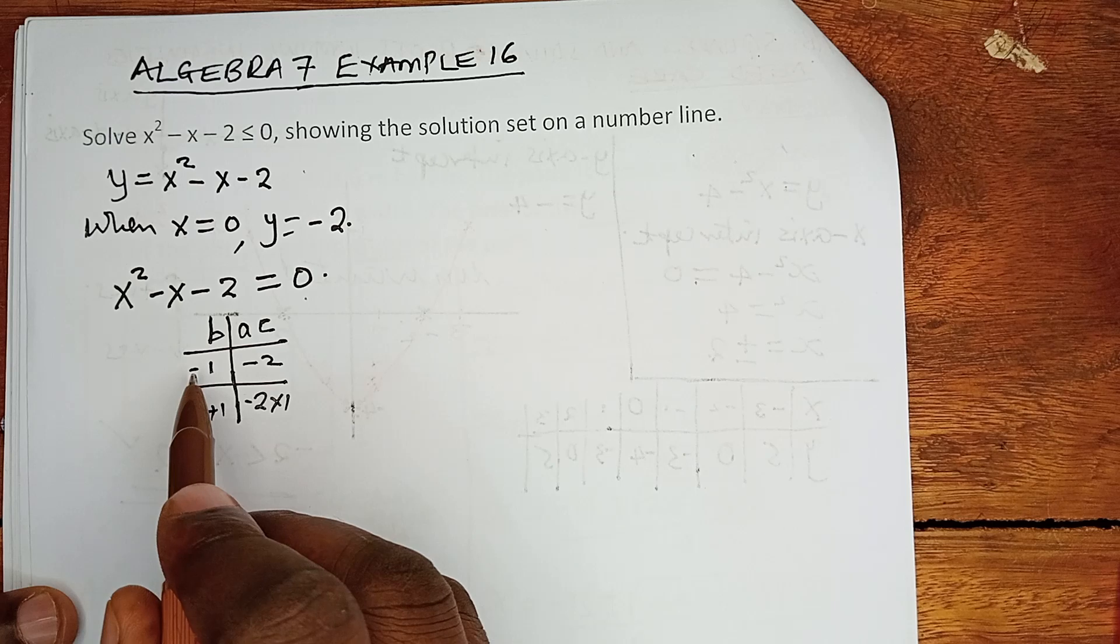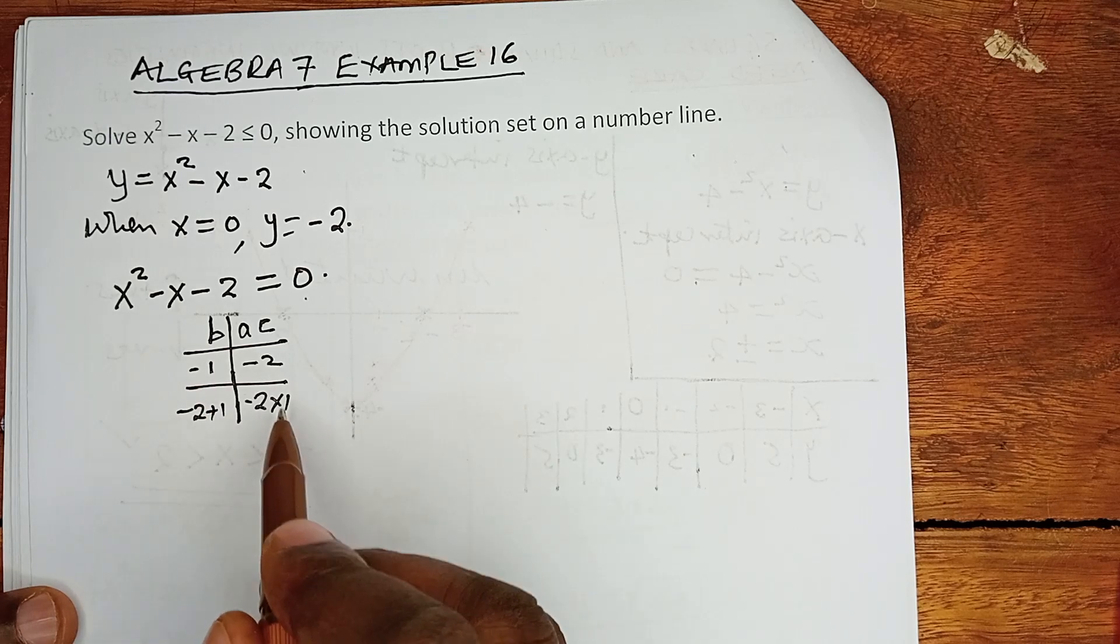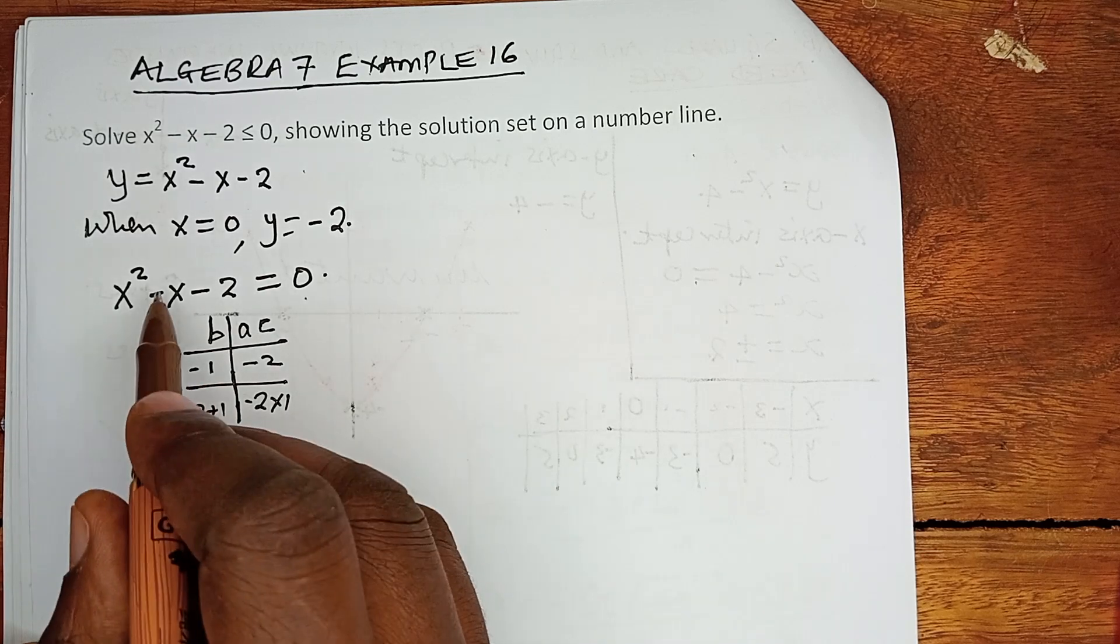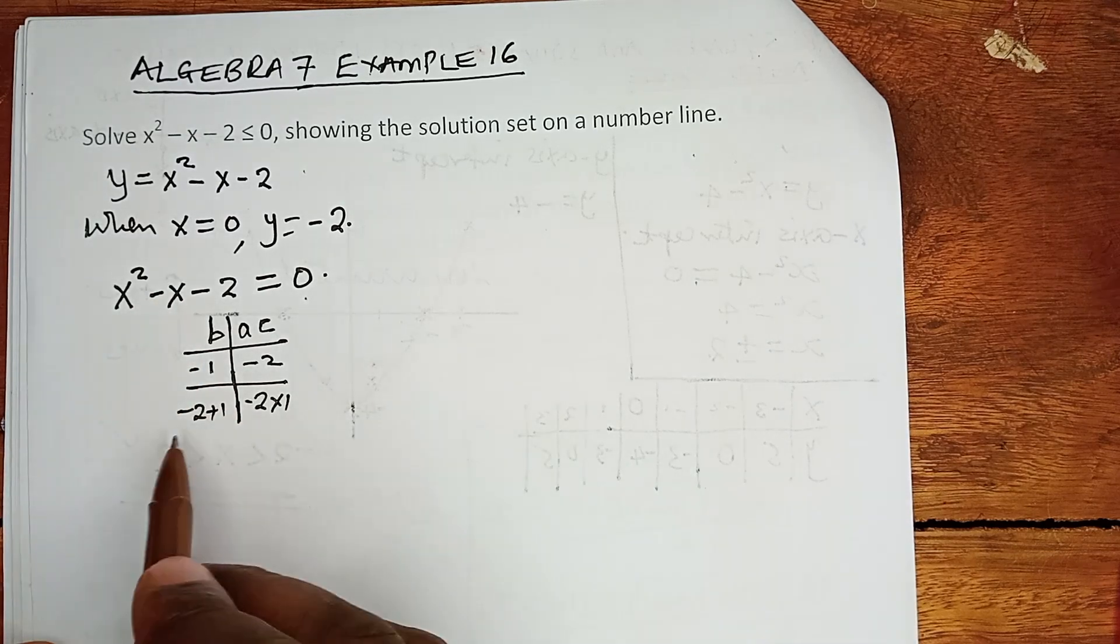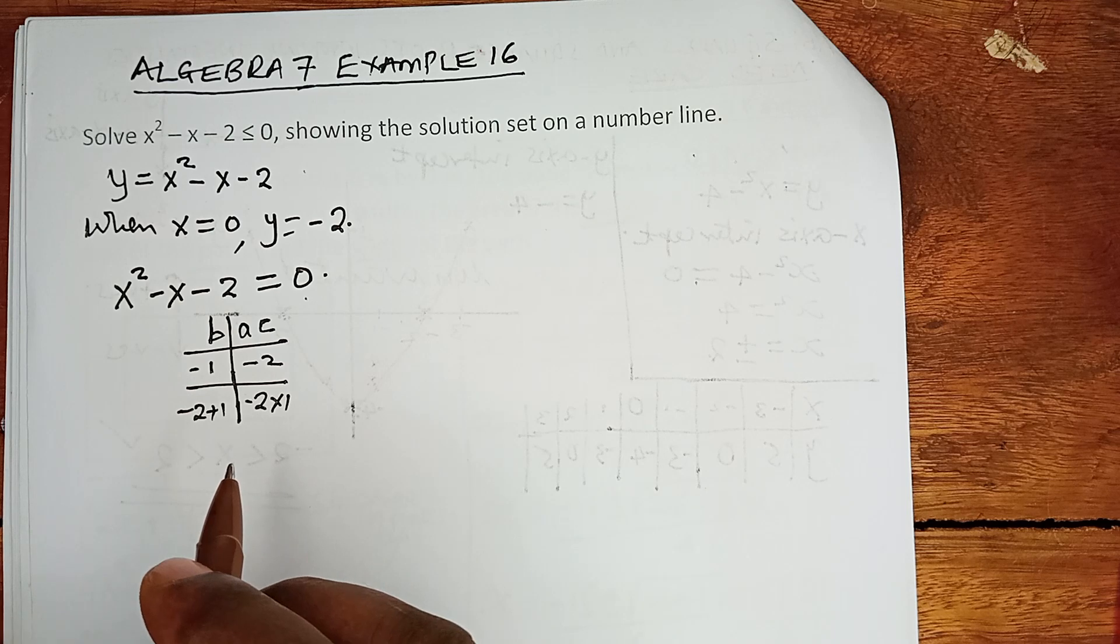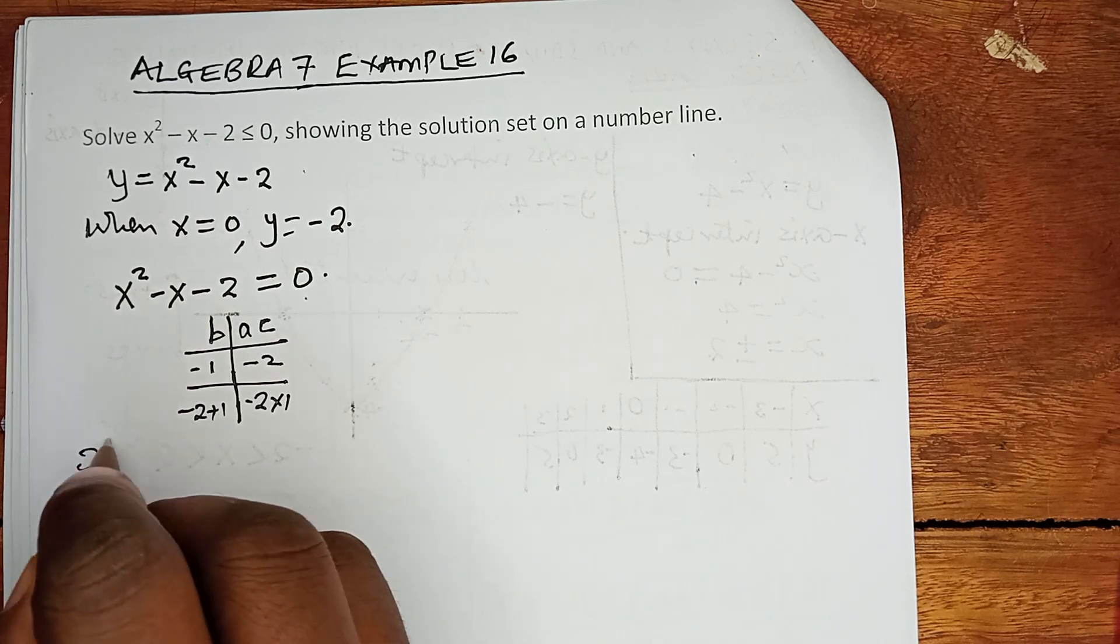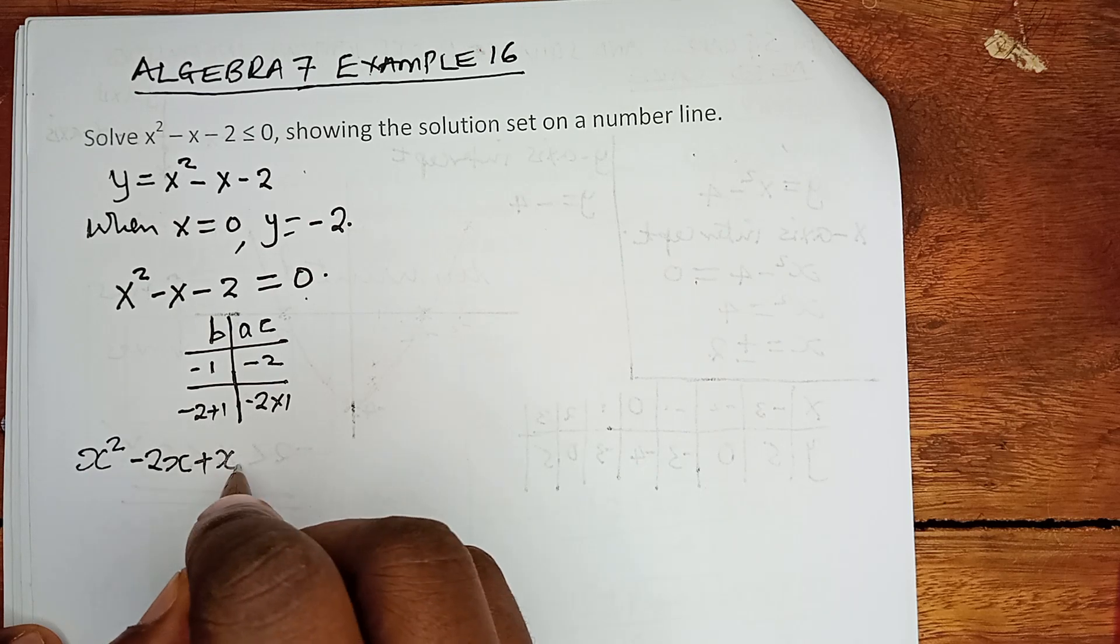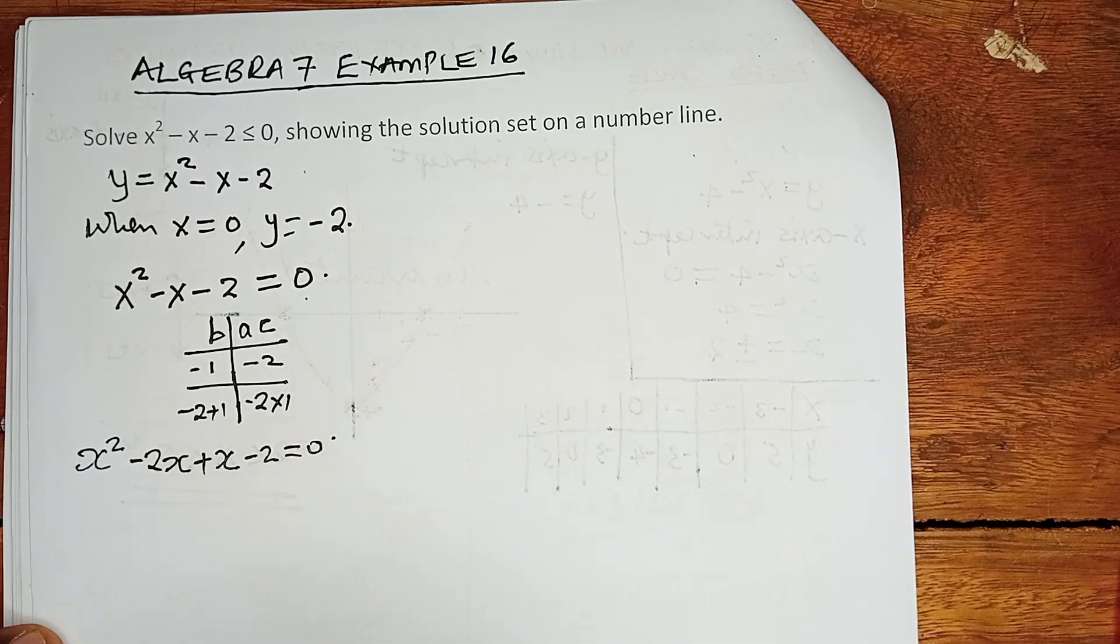Those two numbers are negative 2 plus 1 and negative 2 times 1. Negative 2 plus 1 is negative 1. Negative 2 times 1 is negative 2. We used to break the middle term and substitute it with the two factors found.